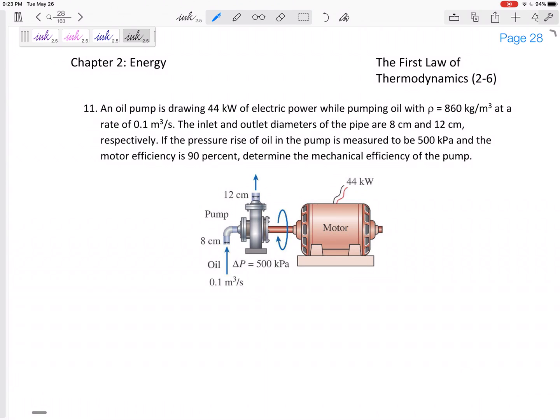All right, last problem in this chapter and it's a good one. We've got an oil pump that is drawing 44 kilowatts of electric power while pumping oil that has that density at that rate. The inlet and outlet diameters are 8 centimeters and 12 centimeters respectively. If the pressure rise in the oil and the pump is measured to be 500 kPa, the motor efficiency, this efficiency is 0.9. Determine the mechanical efficiency of the pump.